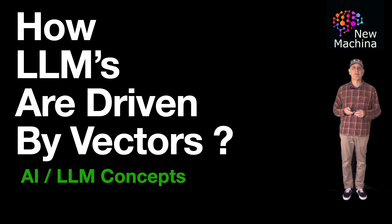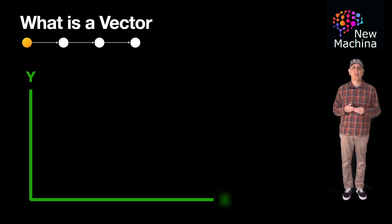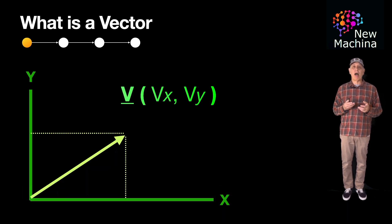Okay, let's get started. First let's start with what exactly is a vector. A vector is a mathematical object that has both magnitude and direction. A vector is typically represented as an ordered list of numbers which are called components or coordinates.